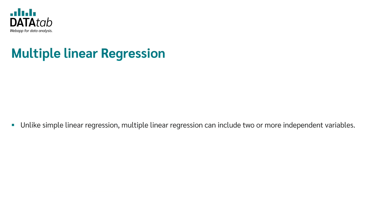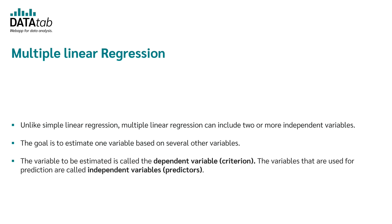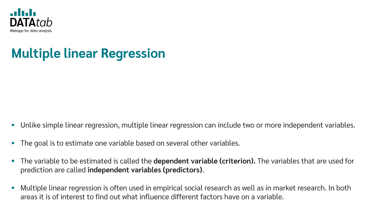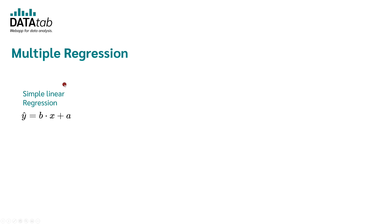In contrast to the simple linear regression, the multiple linear regression can include two or more independent variables. The goal of a regression is to estimate one variable based on several other variables. The variable to be estimated is called the dependent variable or criterion, and the variables used for prediction are called independent variables or predictors. Multiple linear regression is often used in empirical social research as well as in market research, where it is of great interest to find out what influence different factors have on a certain variable. The equation for simple linear regression has one independent variable x plus the constant a.